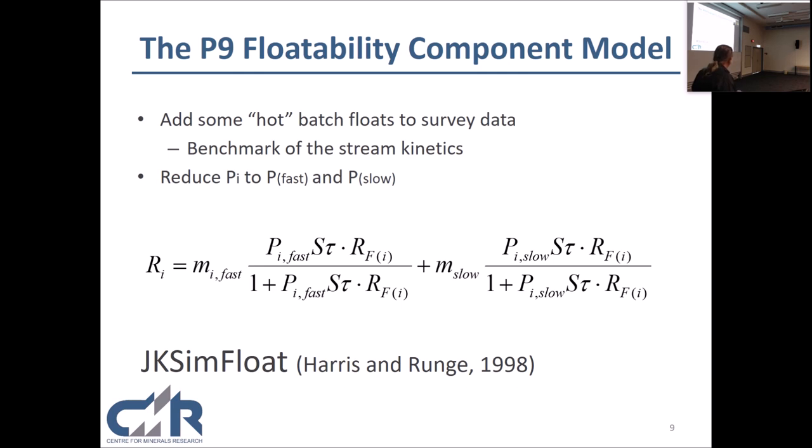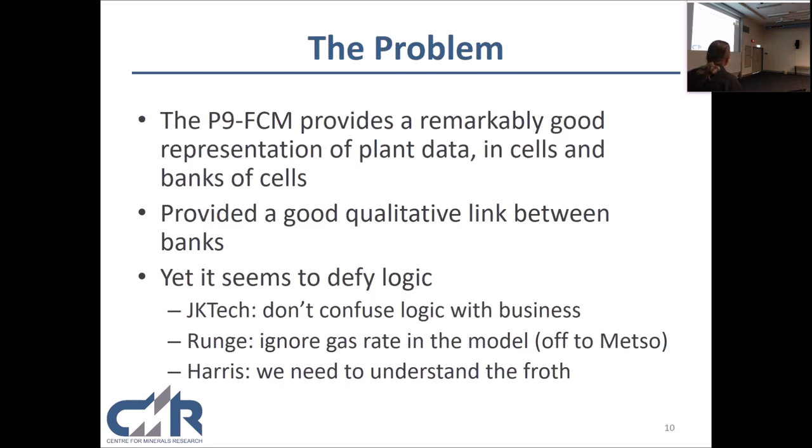And, you can tell when some people start to reach around and get something to work, well, RF started to get parameterized then as if it was a feed characteristic. It's absolutely wrong. It offended me to the depths of my core of my being, but it nonetheless happened. And so, we've got some models that have been produced by people you and I both know that might have as many as five or six hundred parameters in them. You know, you could fit a herd of elephants once you start fitting RF by whatever class you've chosen to categorize. But nonetheless, there's no question that this particular model provides a remarkably good representation of plant data in cells and banks and circuits. Remarkably good.